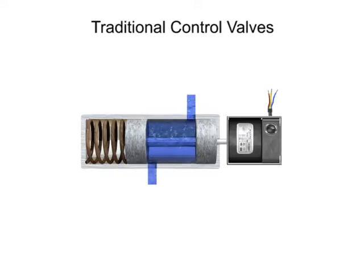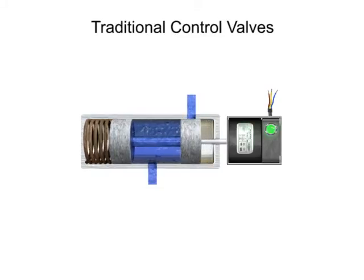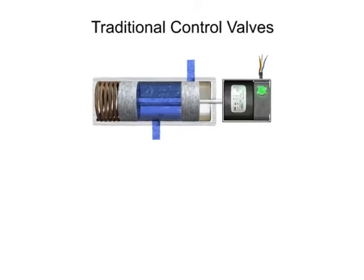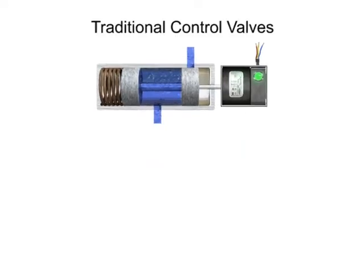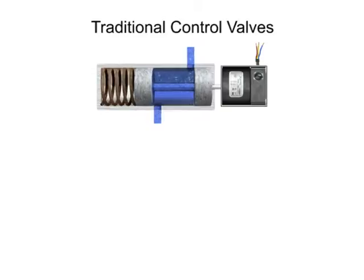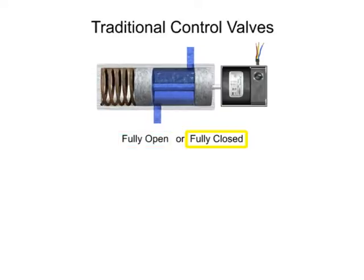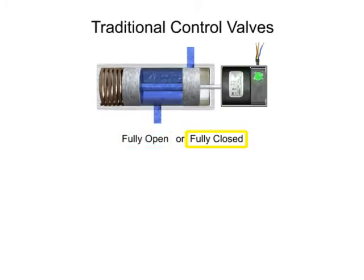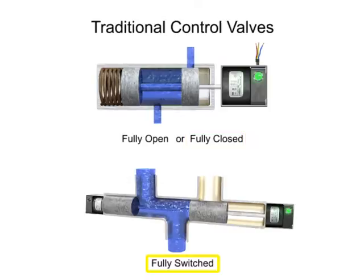Traditional control valves are the most basic type. The flow control of a traditional control valve is typically limited to fully open, fully closed, or fully switched to a new flow path.